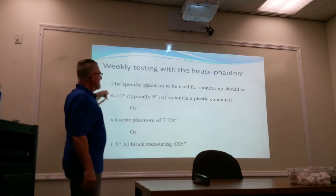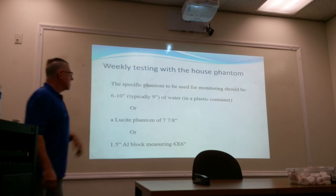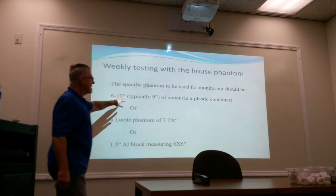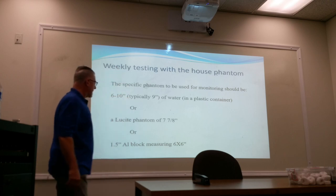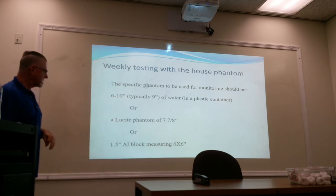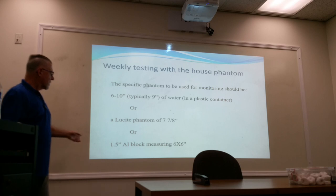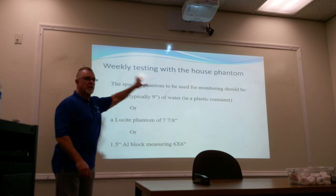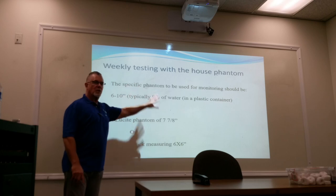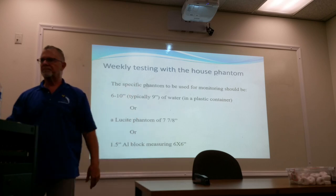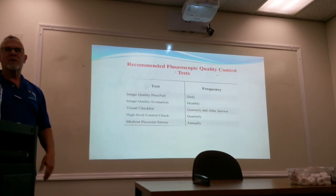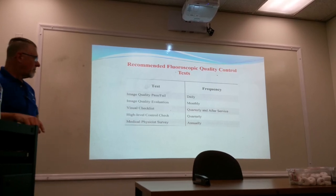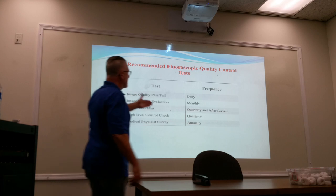The specific phantom used for fluoro QC should be six to ten inches — typically nine inches — of water in a plastic container or Lucite phantom, or seven to eight inches of Lucite, or a one-and-a-half inch aluminum block. This is for QC purposes, not the regulatory measuring of dose. This would be your weekly fluoro test.